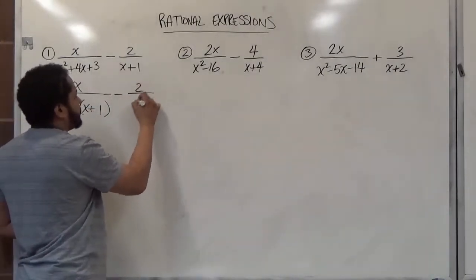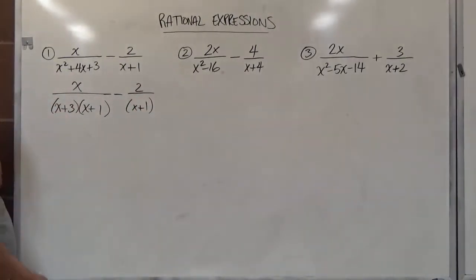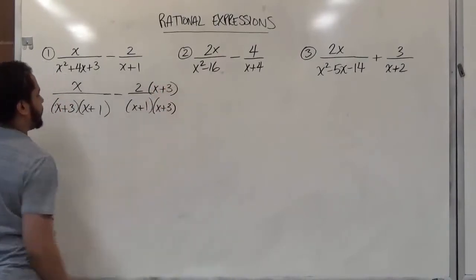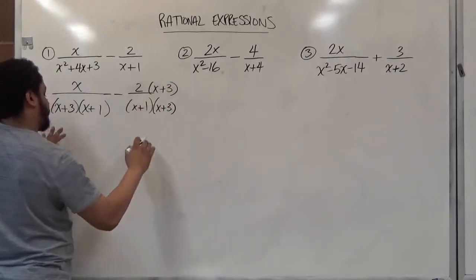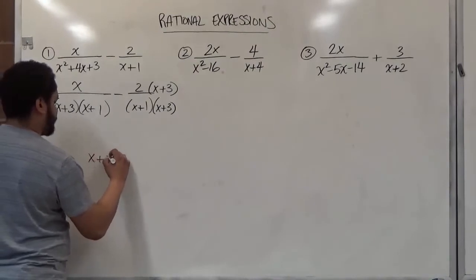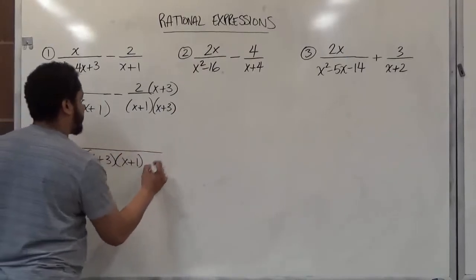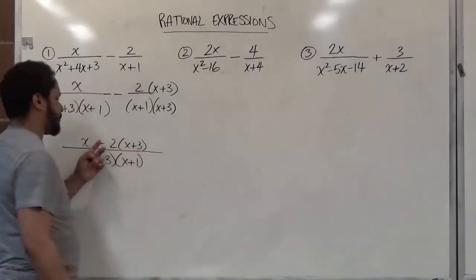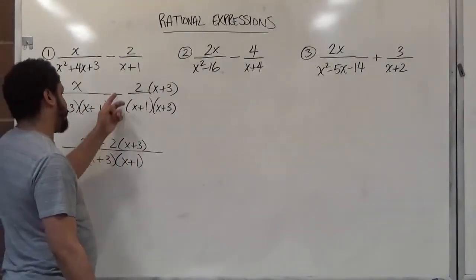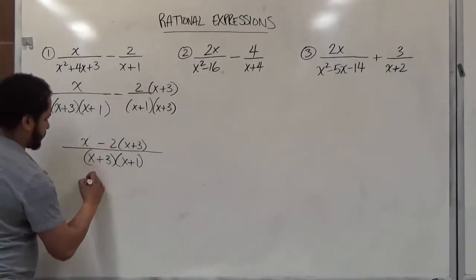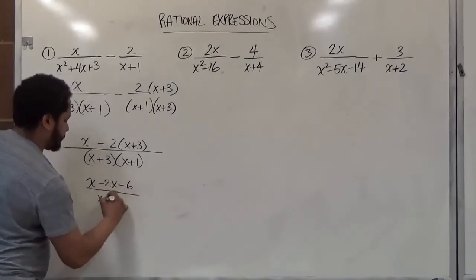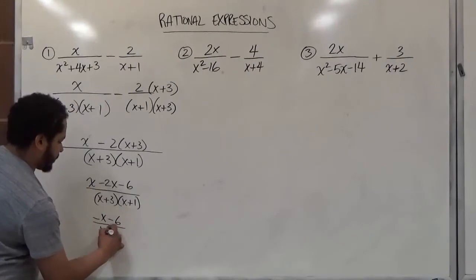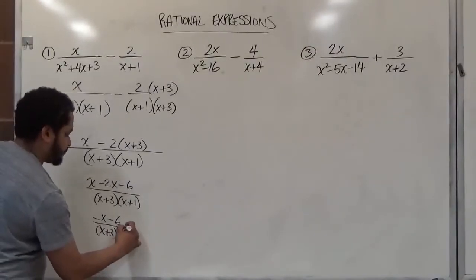We're subtracting two over x plus one, and to complete the LCD we need to multiply the top and bottom of that fraction by x plus three. Whatever we do to the bottom we do to the top. Now we combine the fractions into one denominator — don't distribute yet. We have minus two times (x+3), so we're distributing a negative two. This gives us x minus 2x minus 6 over (x+3)(x+1), which simplifies to negative x minus 6 over (x+3)(x+1).